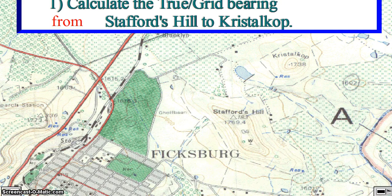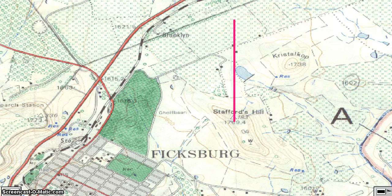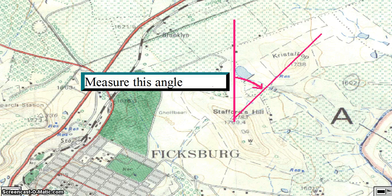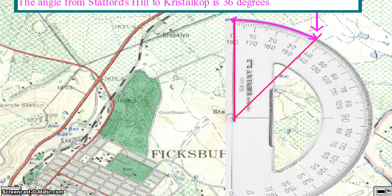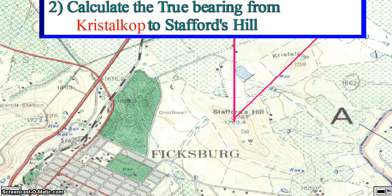In order to calculate the true bearing or grid bearing from Stafford's Hill to Crystal Corp, draw a north-south bisector through Stafford's Hill. Join Stafford's Hill and Crystal Corp with a straight line. Measure the angle from Stafford's Hill to Crystal Corp in a clockwise direction. The true bearing from Stafford's Hill to Crystal Corp will be 36 degrees.